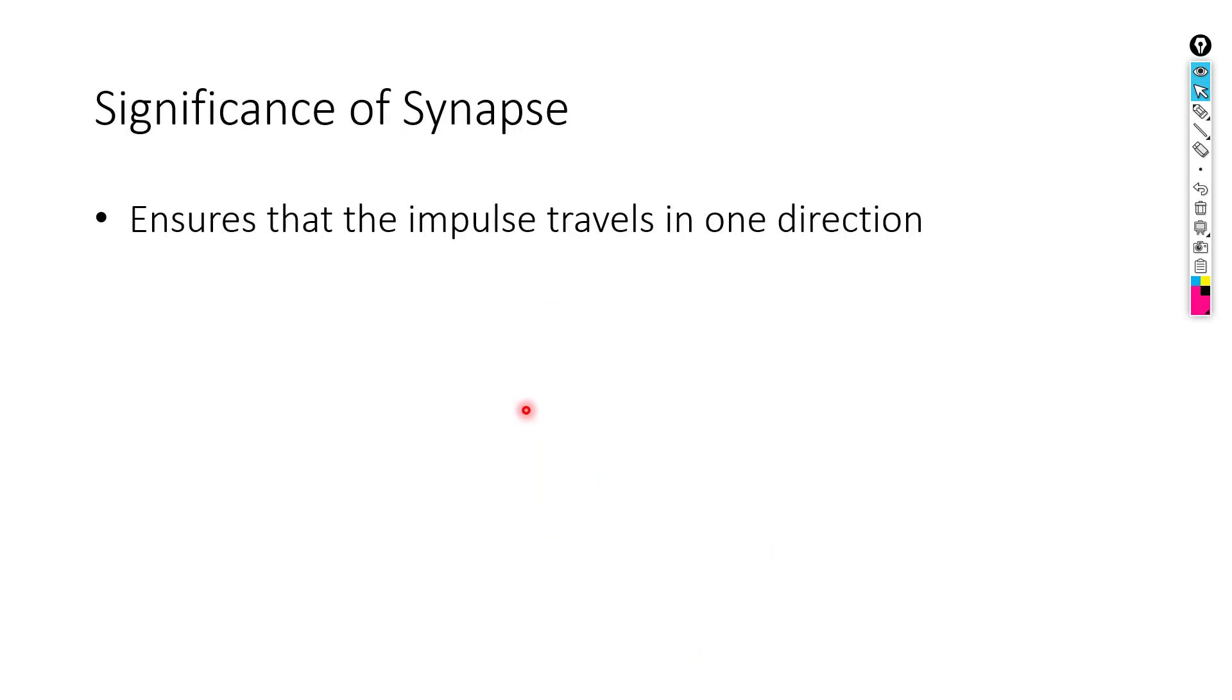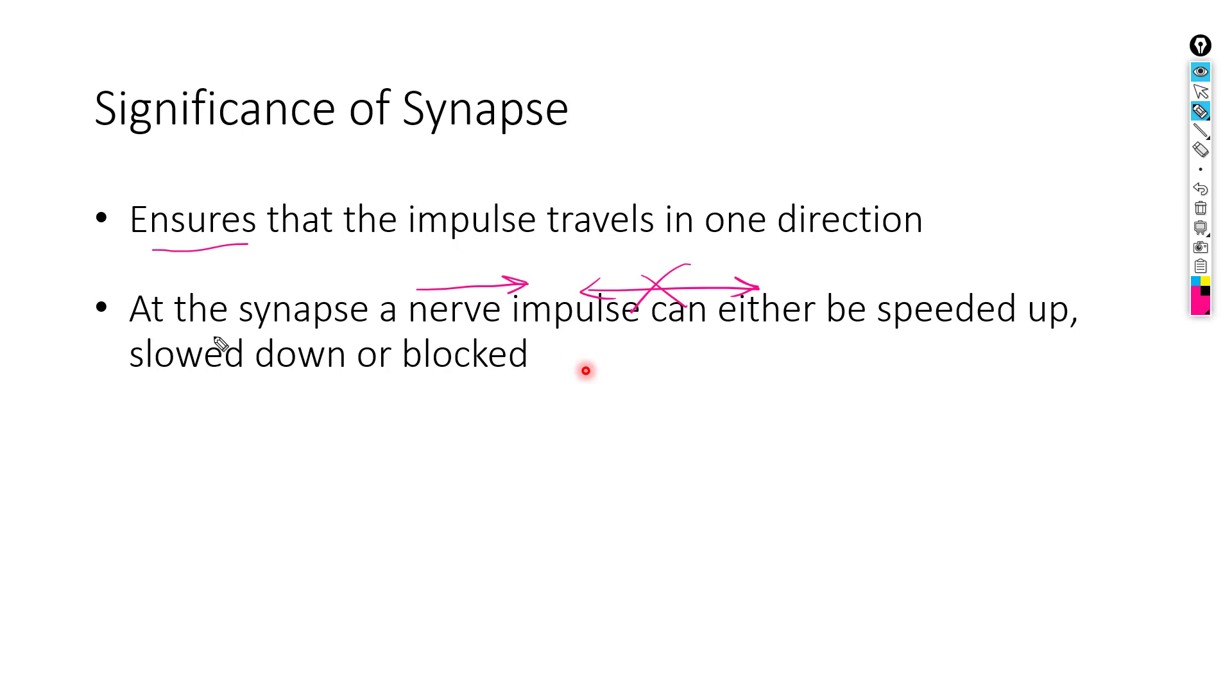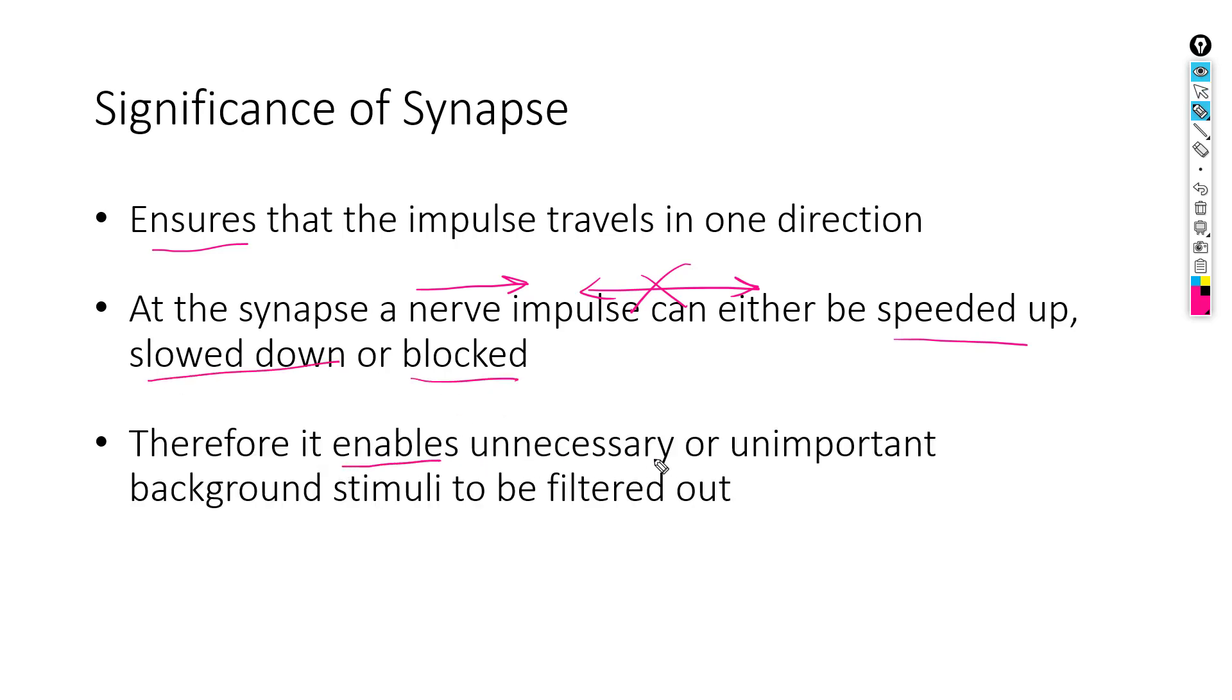Now, the significance of synapse: it ensures that the impulse travels in one direction only. So, there's not gonna be any unidirectional flow in the neurons. At the synapse, a neuron impulse can be either speeded up, slowed down, or blocked. By this, it enables unnecessary or unimportant background stimuli to be filtered out.